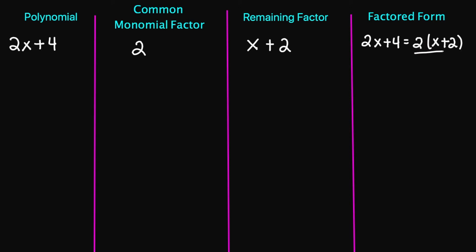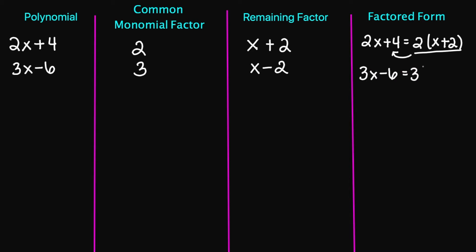This is the factored form for 2x plus 4. So let's try 3x minus 6. What is the common monomial factor? The common factor is going to be the number 3. If I factor out a 3, I'll be left with x minus 2. And my factored form is going to be 3x minus 6 factors out into 3 times x minus 2.